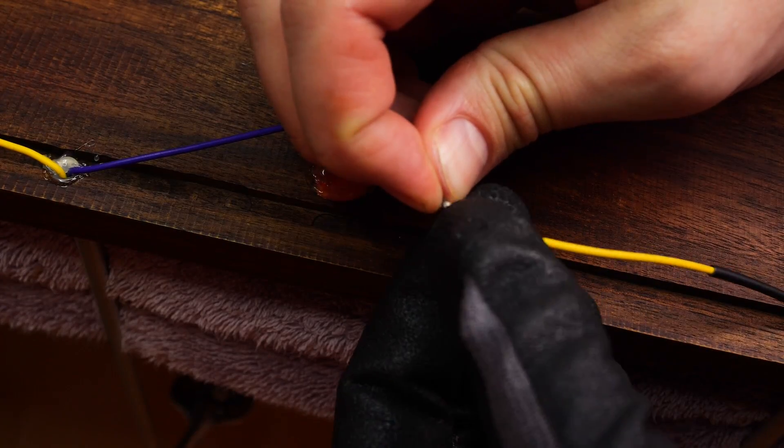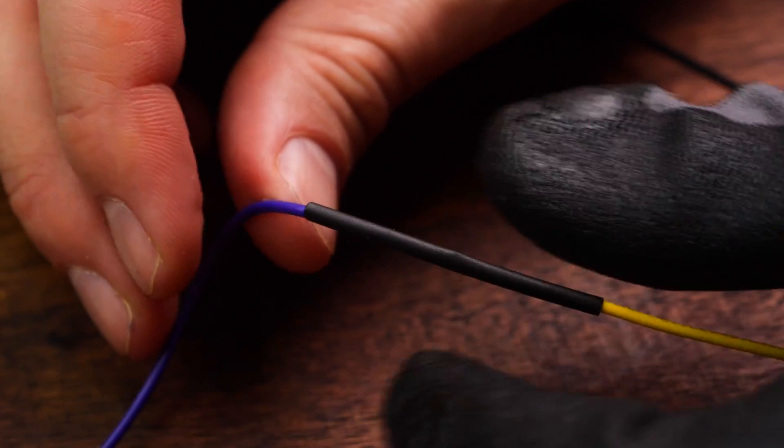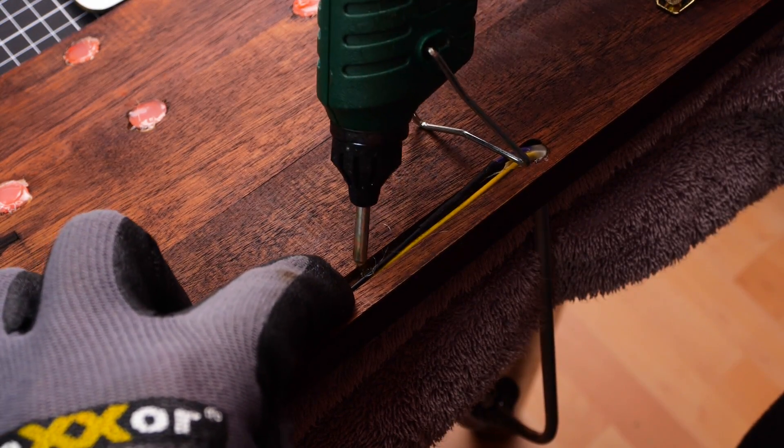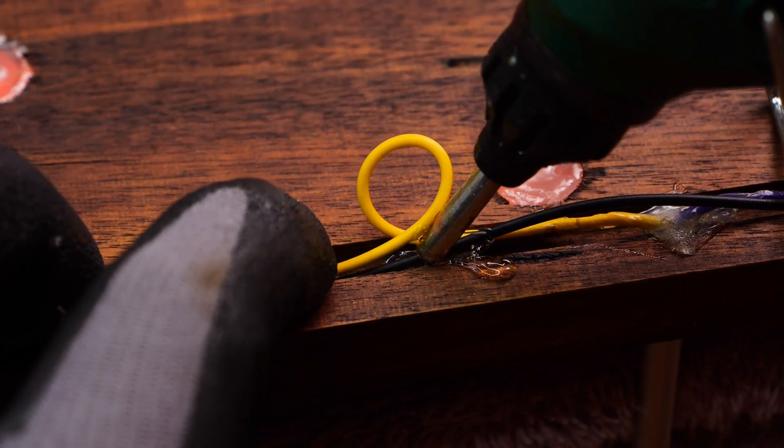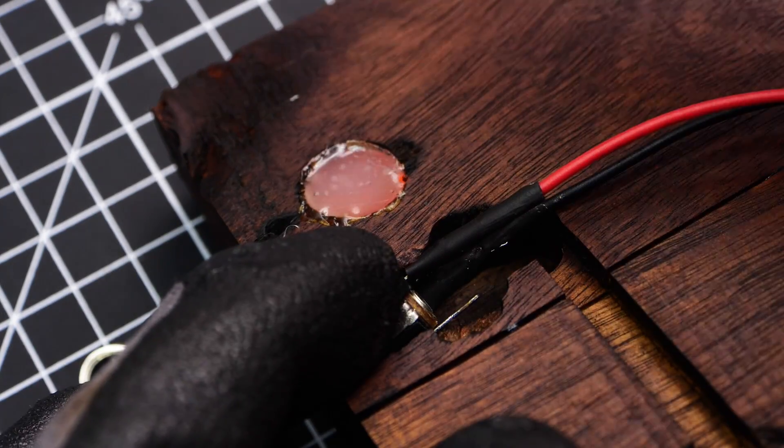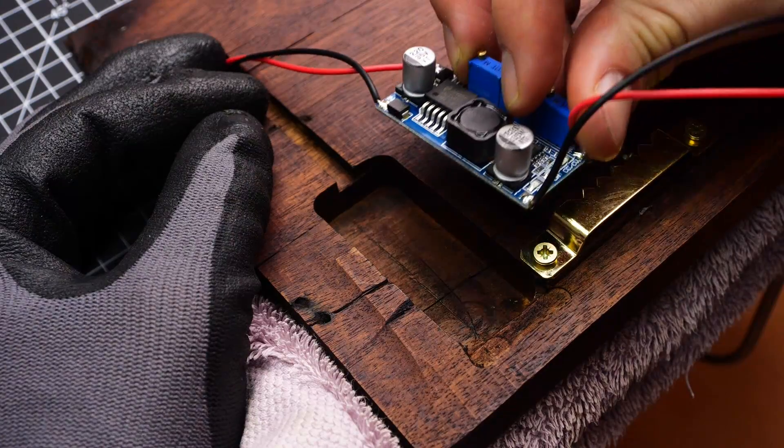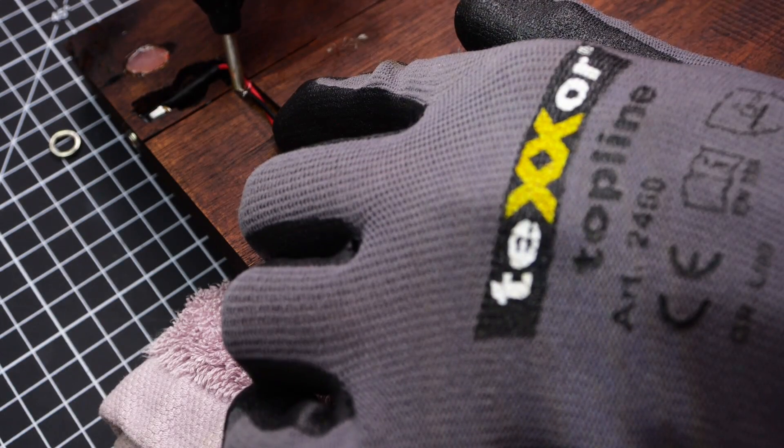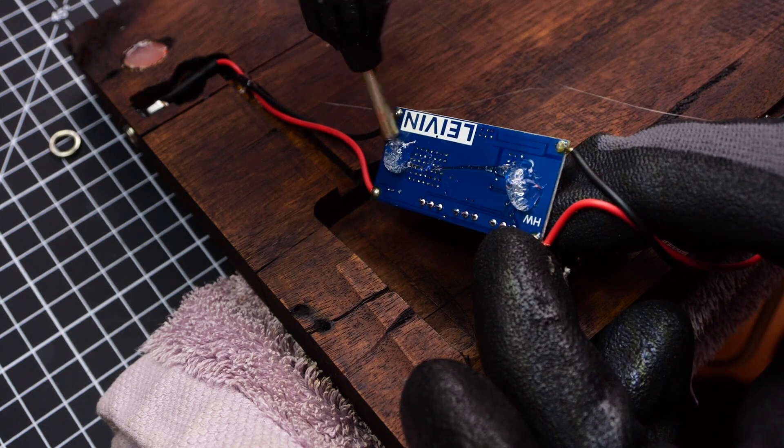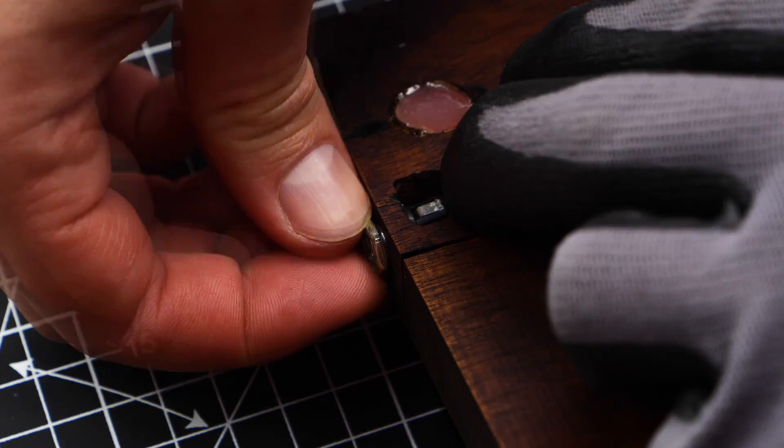The wires can now be soldered together and secured in place with some more hot glue. The power connector fits nicely to its slot, and so does the power board. I'm using hot glue. Finally, a little nut, and we're done.